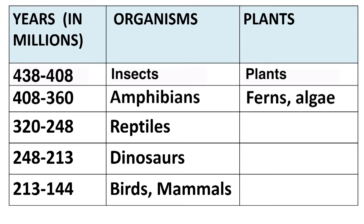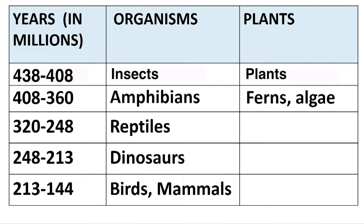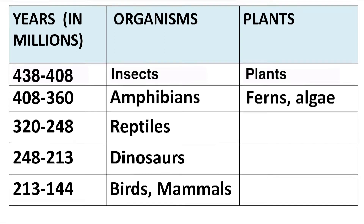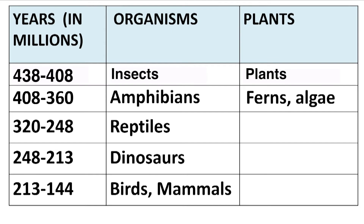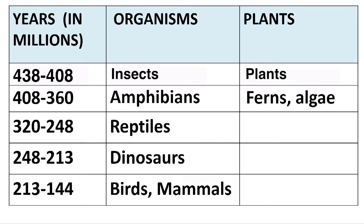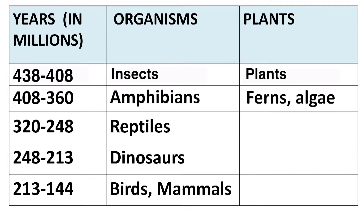Between 320 to 248 million years ago, the organisms which evolved were reptiles — animals which crawl with the help of their body, such as snakes. Between 248 to 213 million years ago, it was dinosaurs which evolved on the earth. Between 213 to 144 million years ago, it was birds and mammals. Mammals are the animals which feed their young ones.